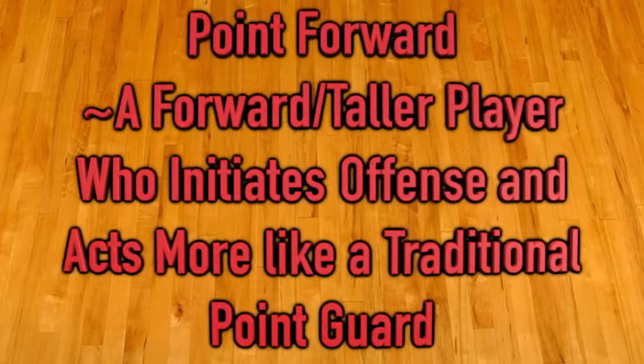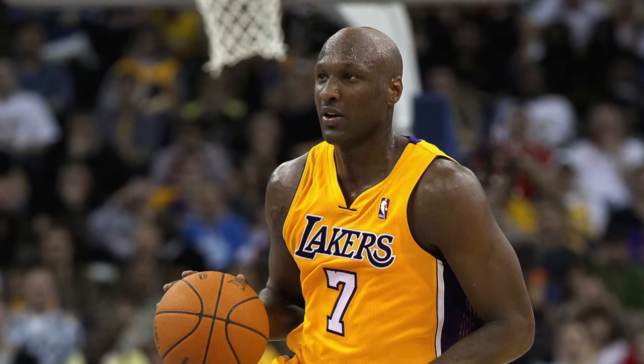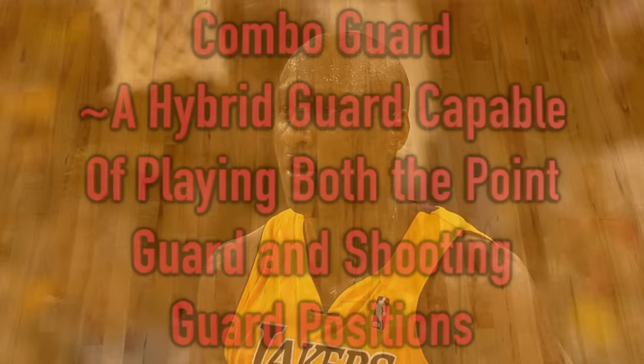Those are the five traditional positions. Now for the bonus round — a few more terms. The point forward is essentially a forward who acts more like a point guard: they bring the ball up the floor frequently, initiate offense, and play out of the backcourt. LeBron is a good example. Another is Lamar Odom — a taller guy who possessed good ball handling and passing skills that helped open things up for his teammates. Draymond Green is another example: taller threes and fours with similar skill sets to point guards.